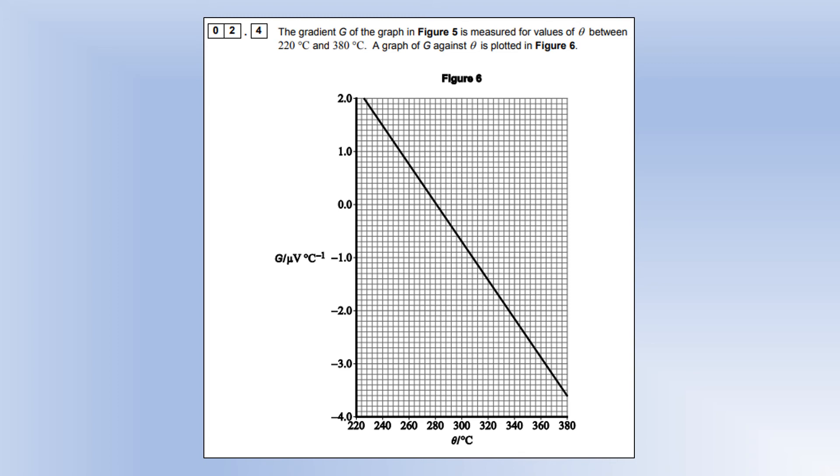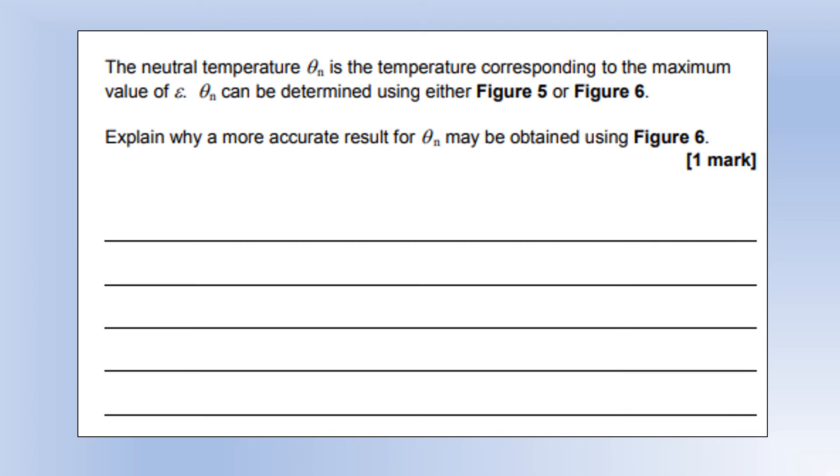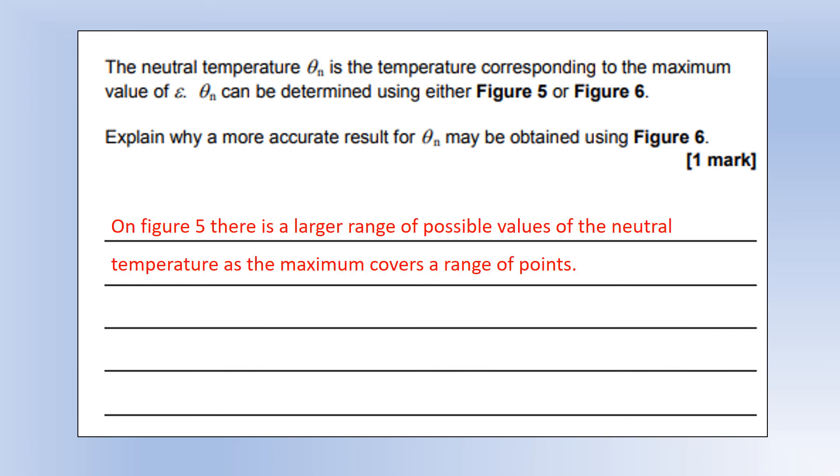The gradient of the graph in Figure 5 is measured for each of the temperature values, and the graph of the gradient against temperature is plotted. The neutral temperature is the temperature corresponding to maximum EMF, and you could find it using either Figure 5 or Figure 6. Explain why it's more accurate to get the value from Figure 6. On Figure 5, the maximum could be a range of possible values - it's quite a flat peak, so there are a lot of values that could have been the maximum theta. Whereas on Figure 6, there is only one point where the gradient is zero, so that's why it's much more accurate - you can pinpoint precisely where that temperature is.